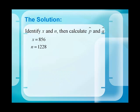First, you want to identify x, the number of successes, and n, the sample size. Then calculate p-hat and q-hat. X was the number of lawsuits dismissed or dropped, which was 856, and n was 1,228.